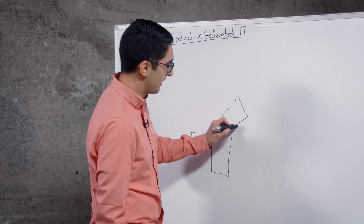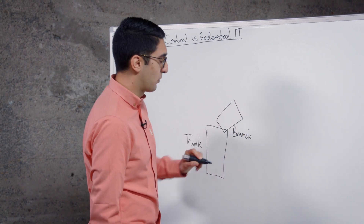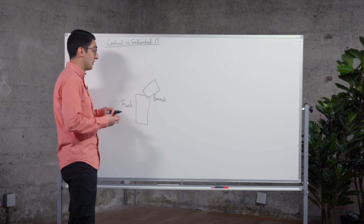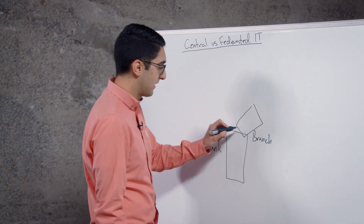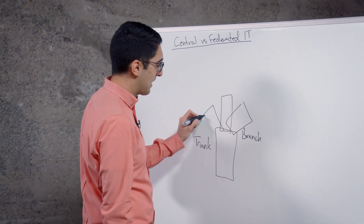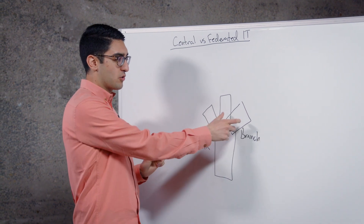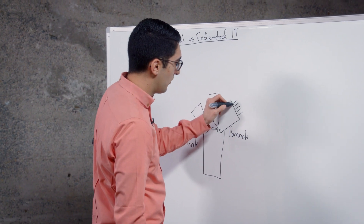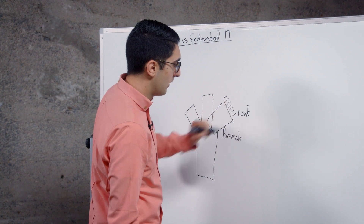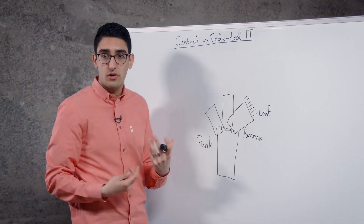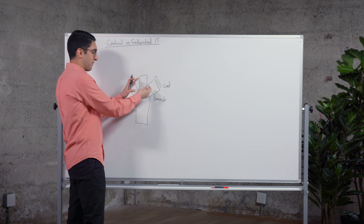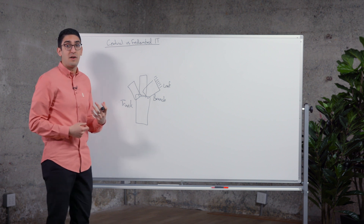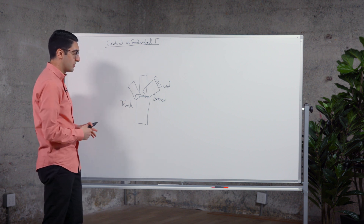On top of that we have a series of branches, and oftentimes these branches will align to maybe a business group, a line of business, or a very large application that has its own way of doing things. Branches provide a key difference from the trunk but still provide a set of common services shared across many applications. These applications then end up being the leaf nodes, and what's available to them is provided either through a branch or from the trunk.